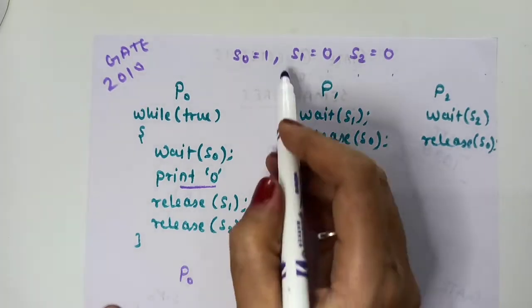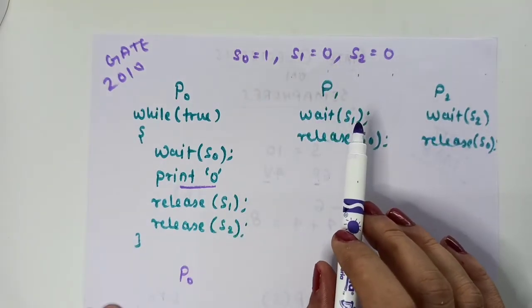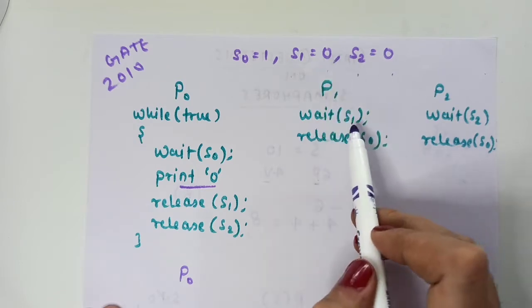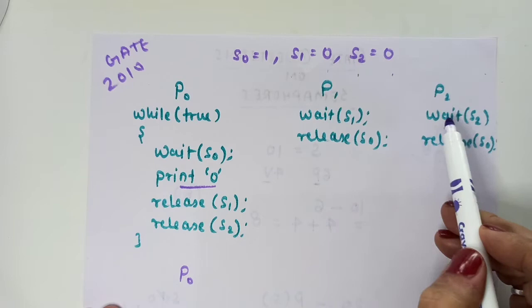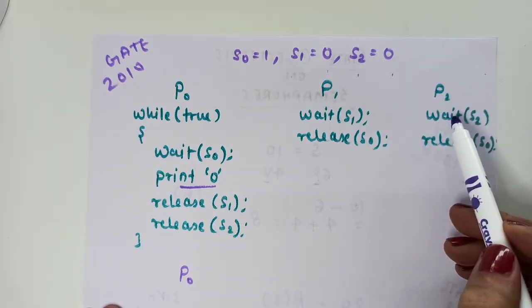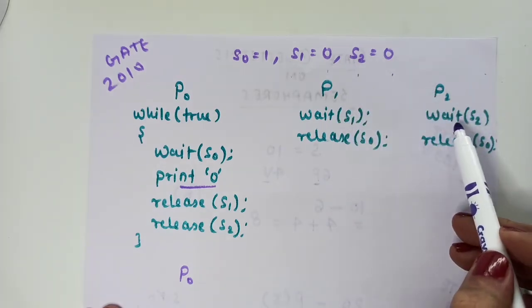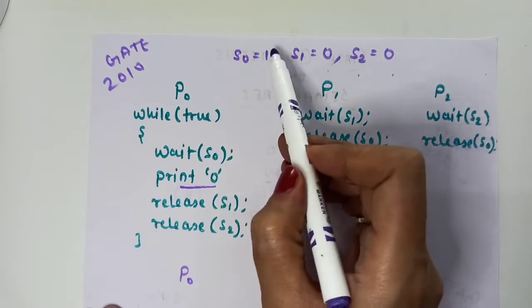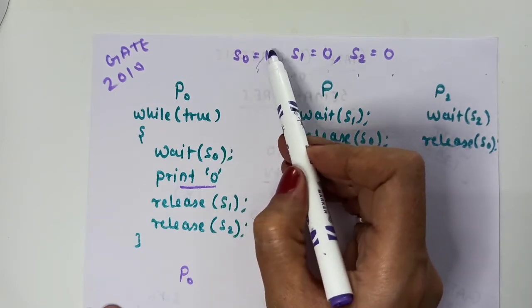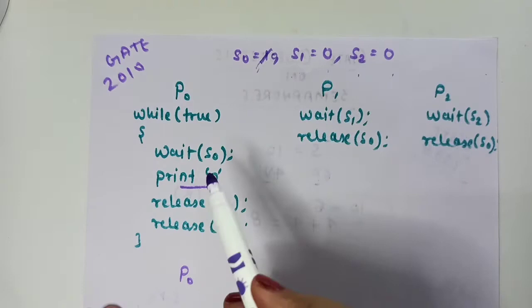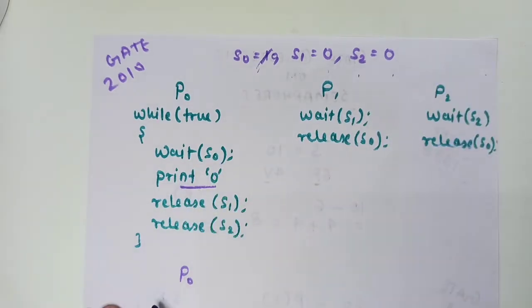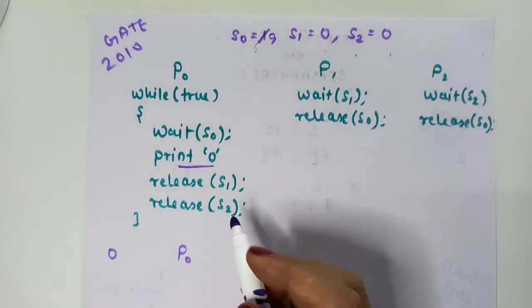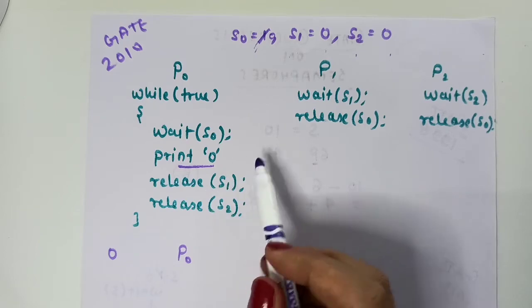First, no one process has priority. If P1 gets a chance, it will wait on S1 — the value is 0, so it will wait. If P2 gets a chance, it will wait on S2 — it will also wait. So when P0 executes, it waits on S0, decrements it to 0, prints 0 one time, then releases S1.